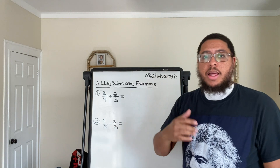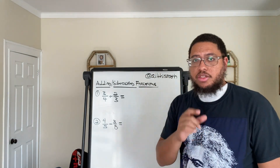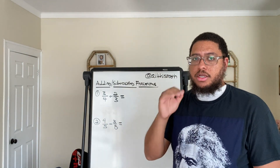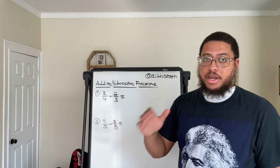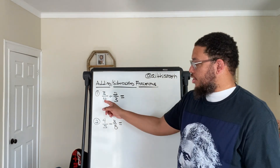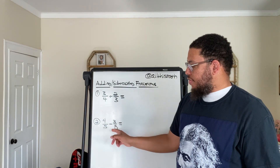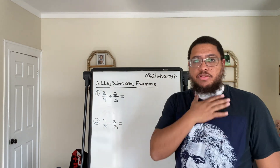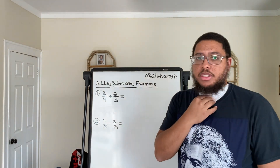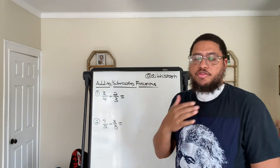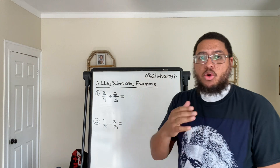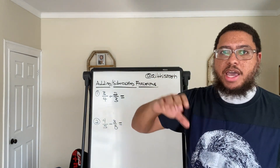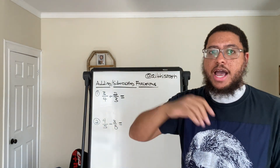More specifically, adding and subtracting fractions with unlike denominators — unlike or different denominators. I see a 4 and a 3 and a 5 and an 8. The denominator is the bottom number in the fraction — it's the number that describes how many total pieces you have altogether in an object.